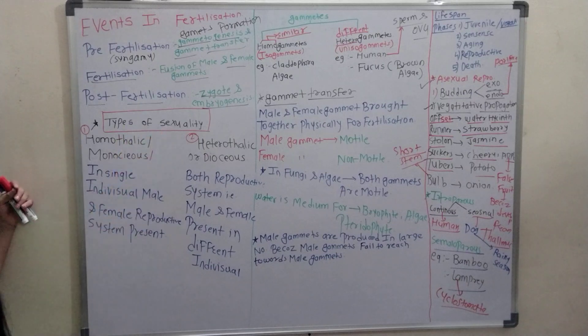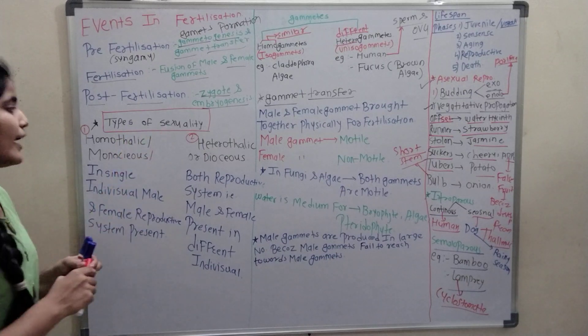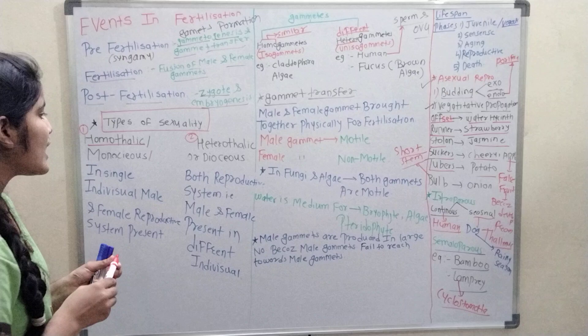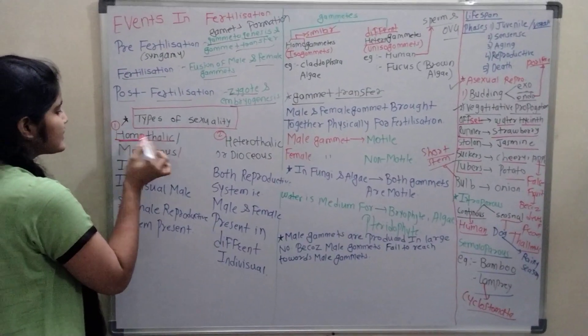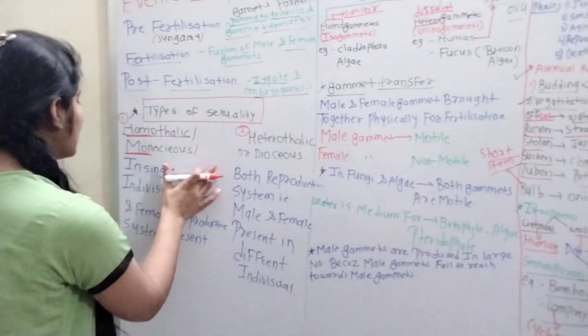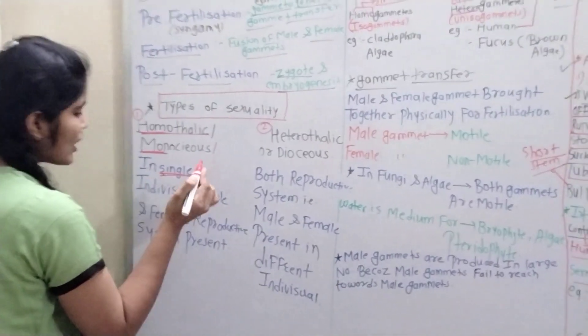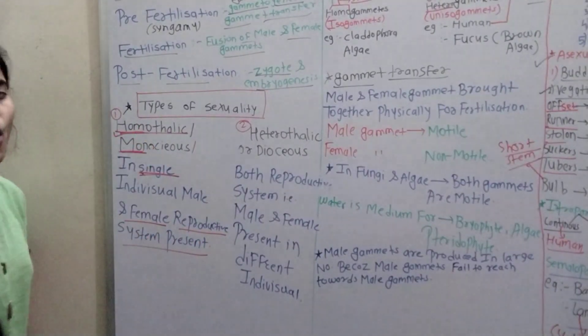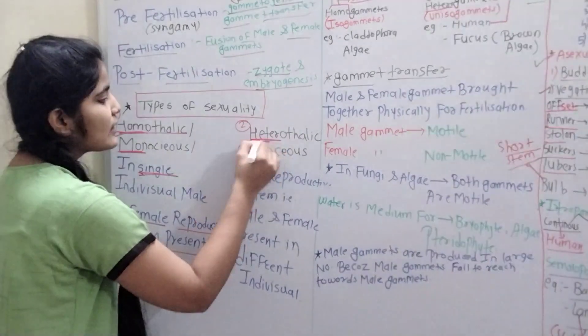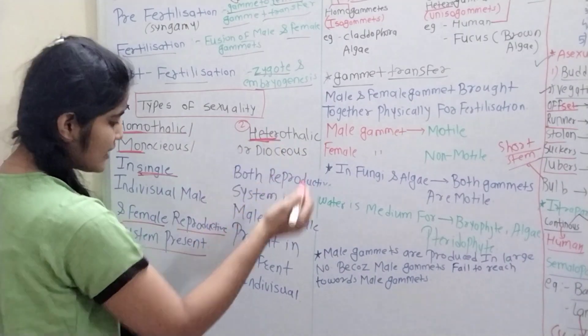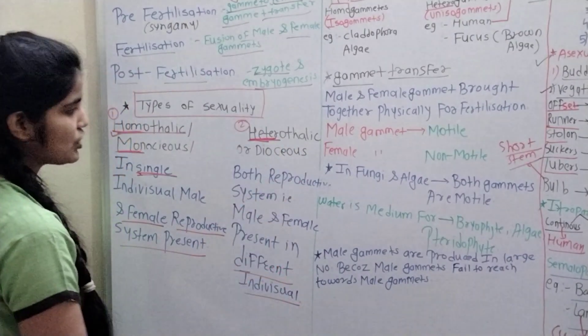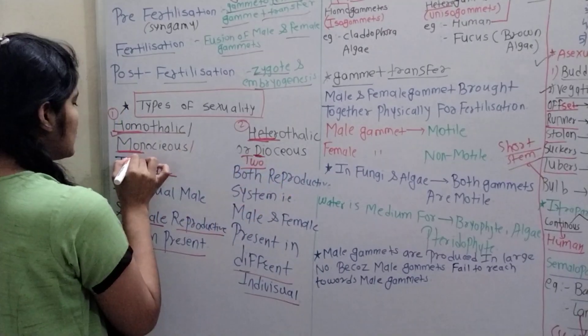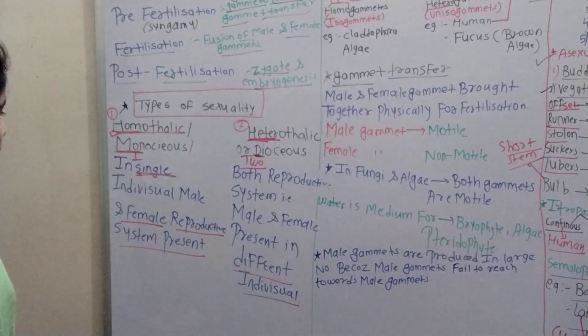Next is types of sexuality: homothallic, heterothallic. Homothallic is interchangeably known as monoecious. And heterothallic is known as dioecious. Homo means same, mono means single. In that case, mono means in single organism, both male and reproductive system are present. That is why it is called homothallic. In heterothallic, hetero means different. Male and reproductive systems are different in individuals. Di-o means two, mono means one.